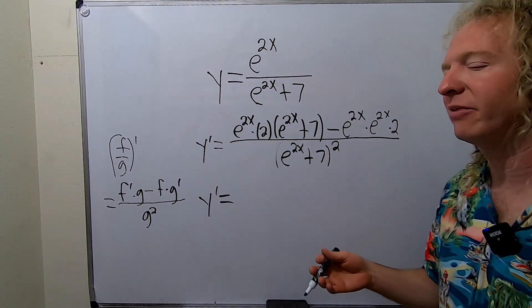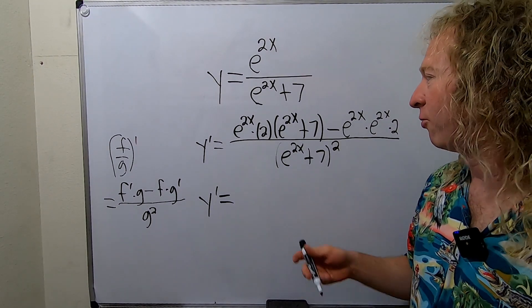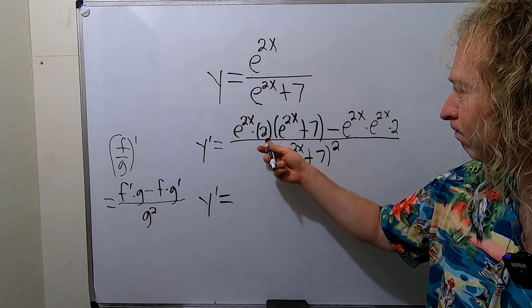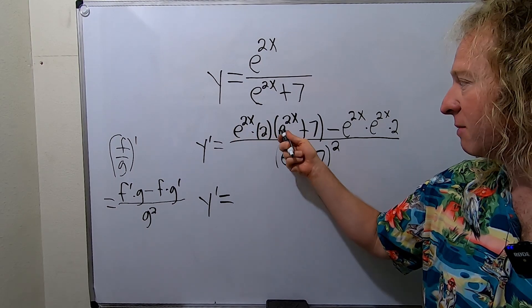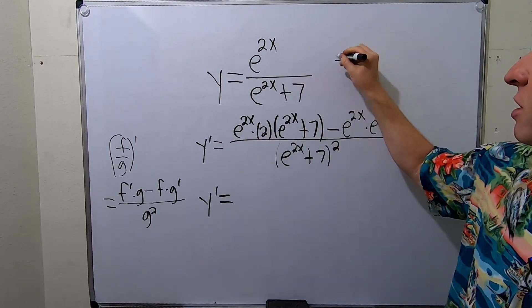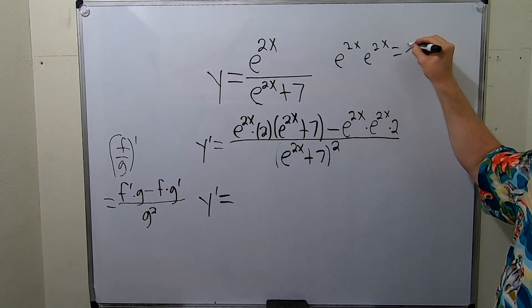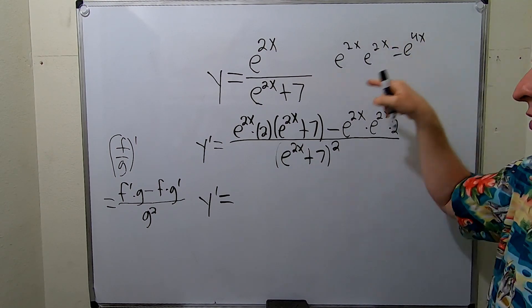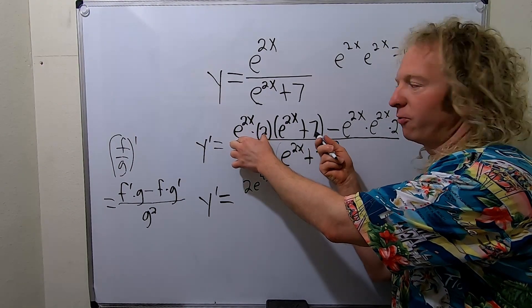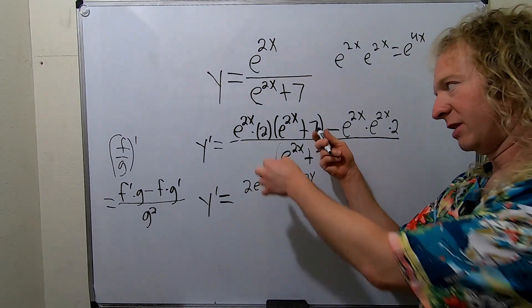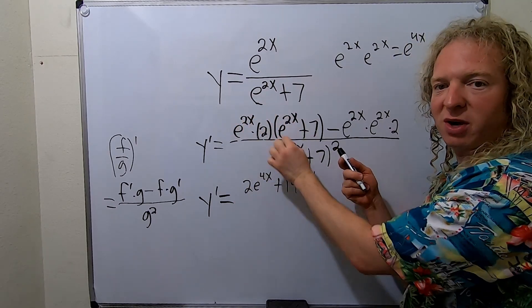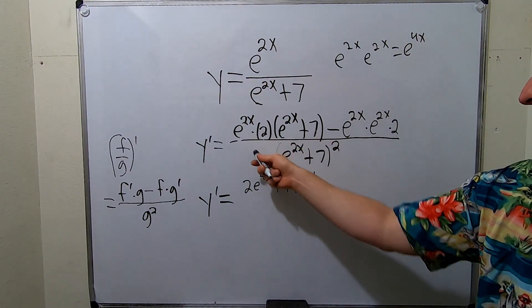I think it's going to clean up nicely. I haven't done this problem. Usually I don't do the problems before making videos, so it's always a little bit of a surprise, but this should clean up. So 2e to the 2x times this. When you multiply these, you add the exponents. You get 2e to the 4x because 2x plus 2x is 4x. This times this, so 14e to the 2x. 2 times 7 is 14.